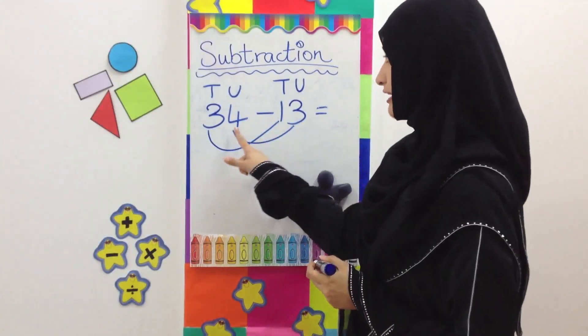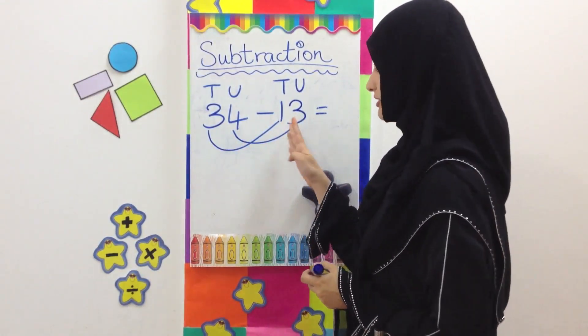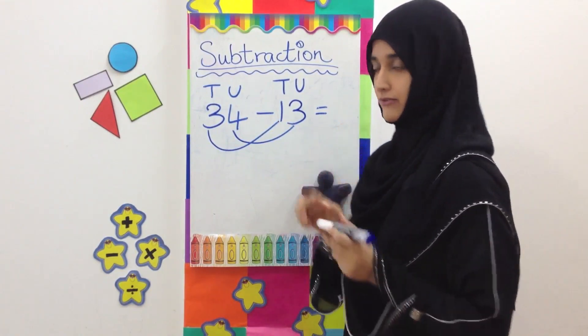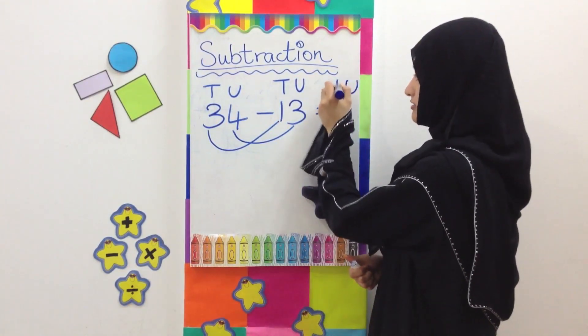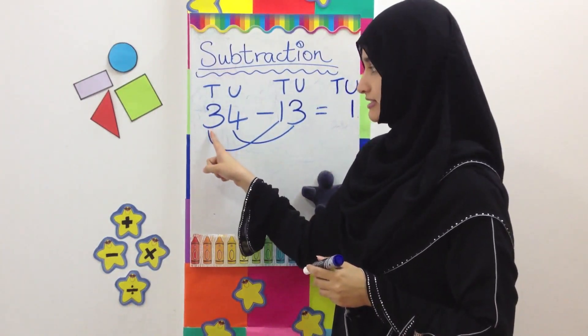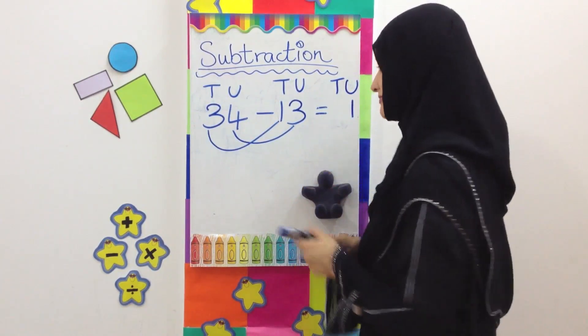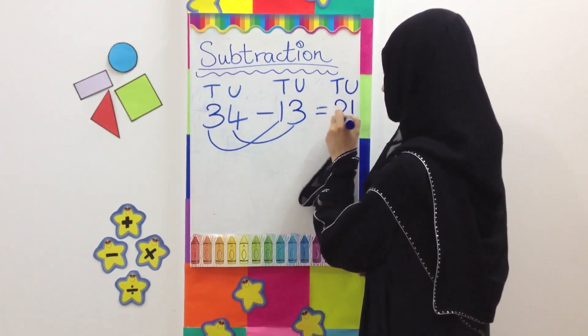Now here we have 4 units. From 4 units we have to take away 3. 4 take away 3, answer is 1. So in the units we write 1. We have 3 tens. 3 take away 1 equals 2. The answer is 21. 34 minus 13 equals 21.